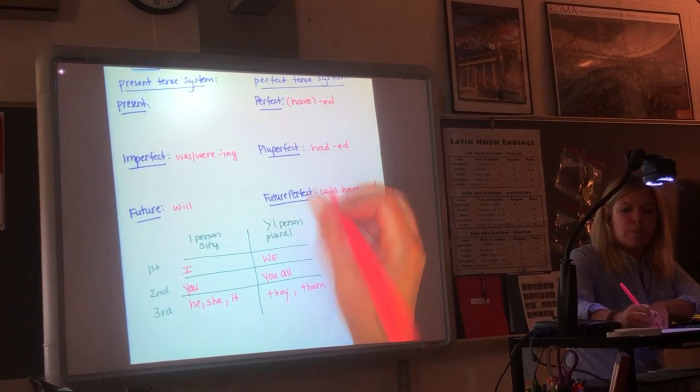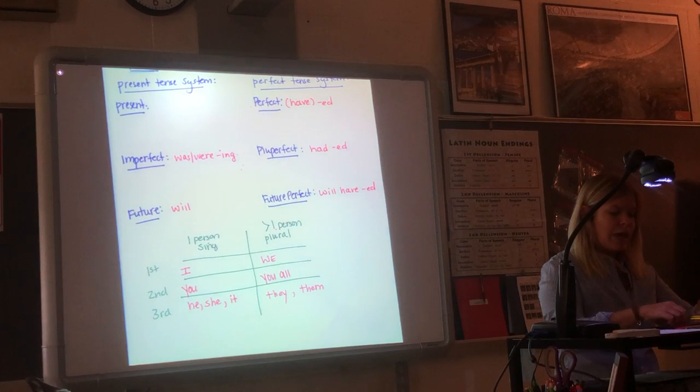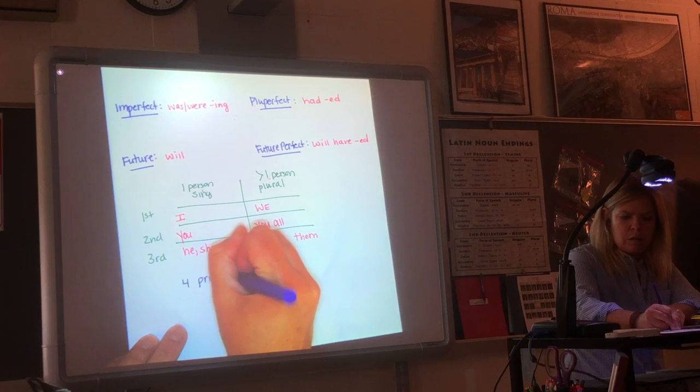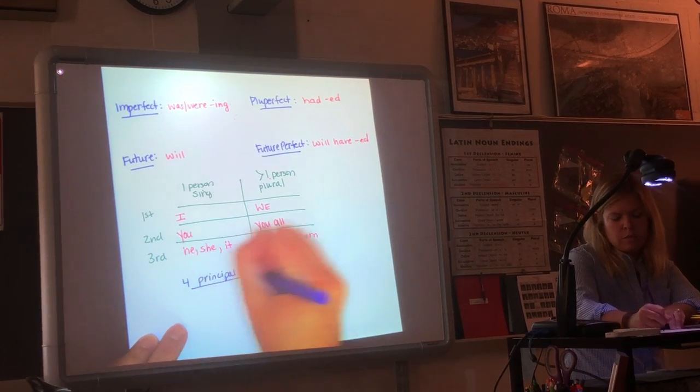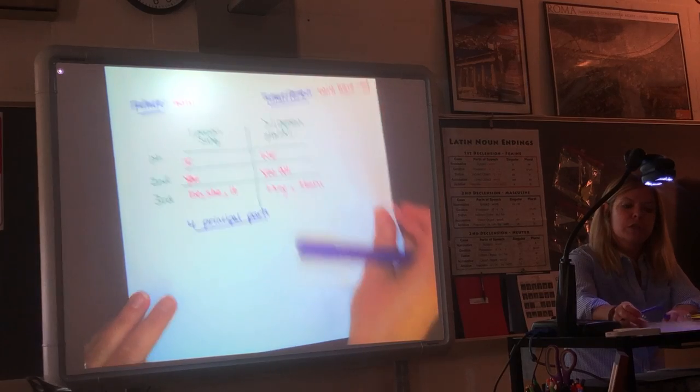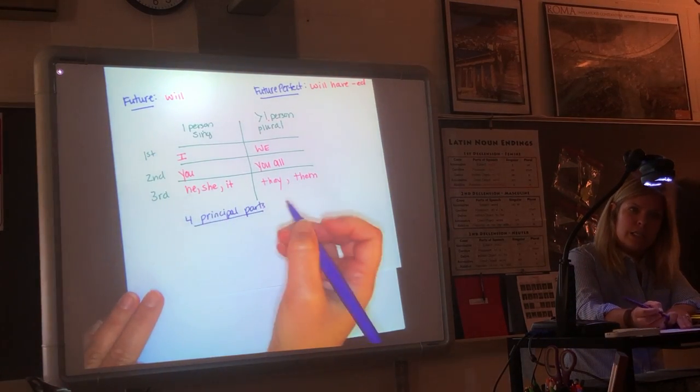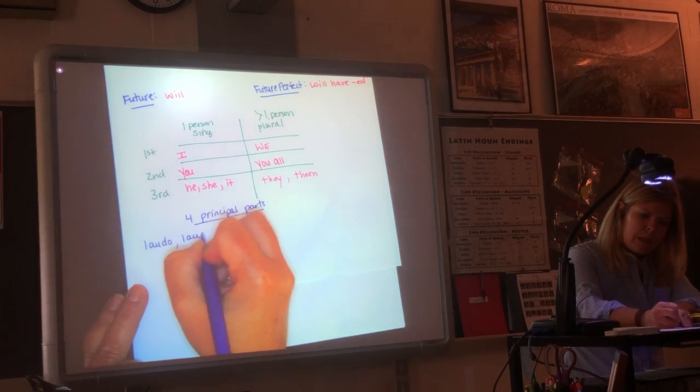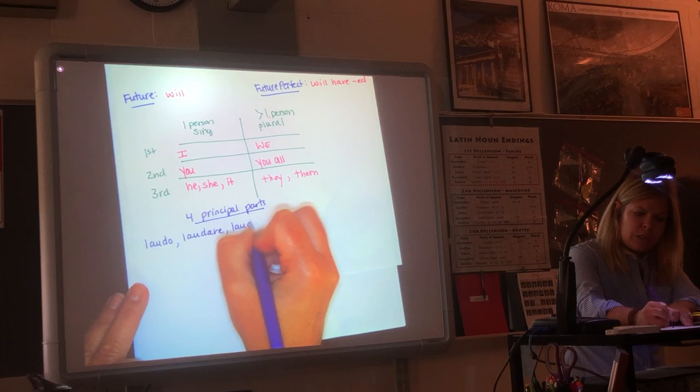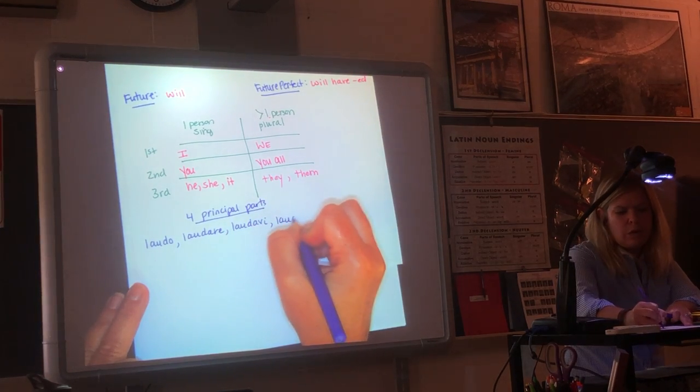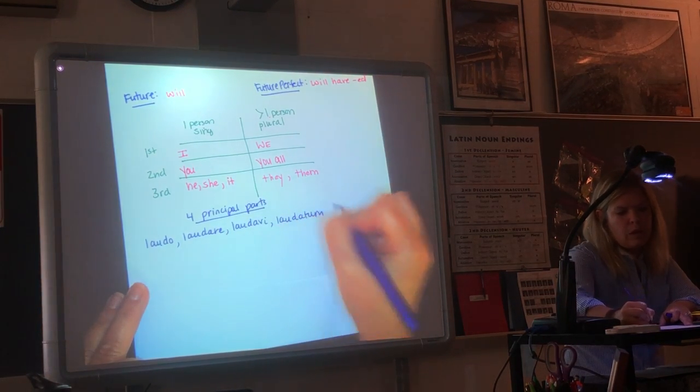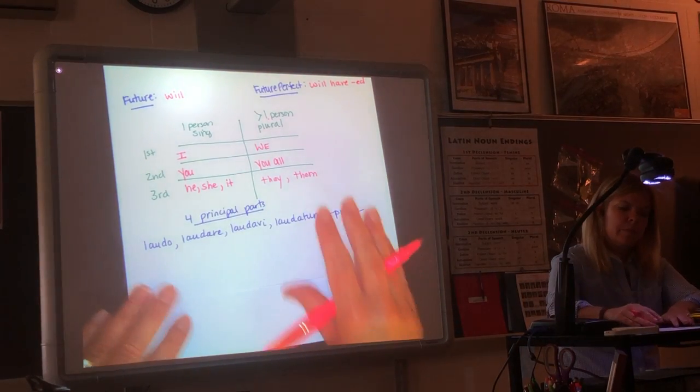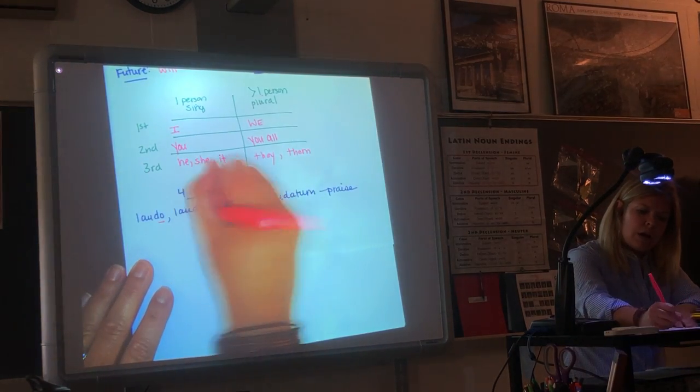Remember there's four principal parts to a verb. Every verb has four principal parts. In Latin 1, we use the first, second, and the third. So, for example, laudo to praise: laudo, laudare, laudavi, laudatum. This is what you would see in the back of the book. All four principal parts.